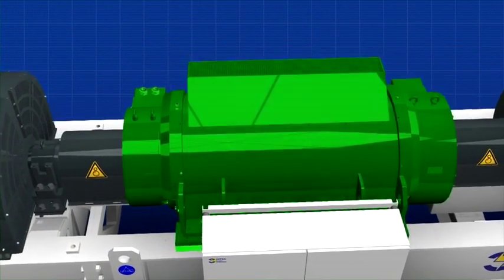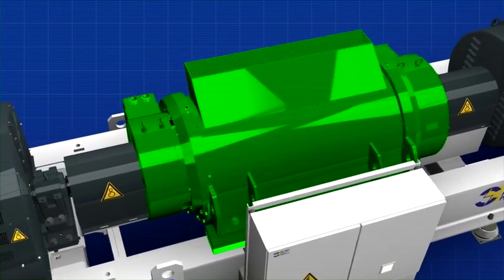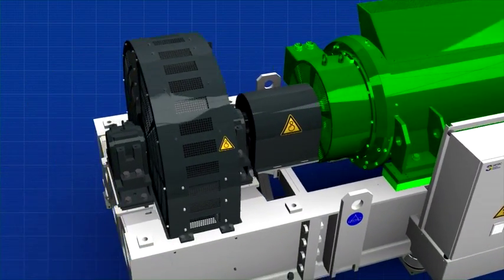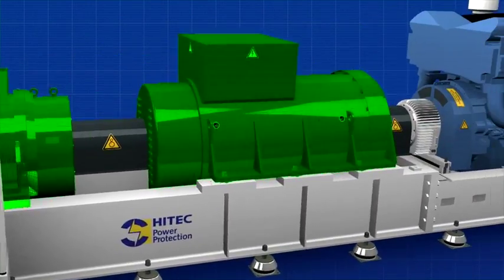The energy transfer module is the heart of the system. It transfers the kinetic energy stored in the flywheel to the generator during utility failures.